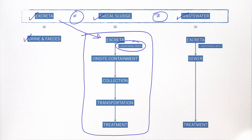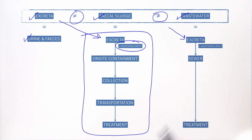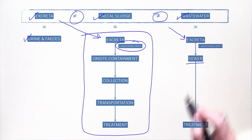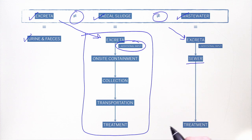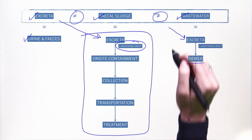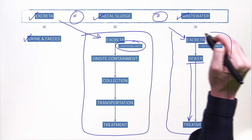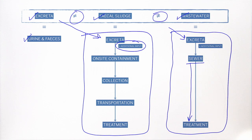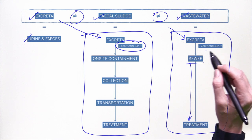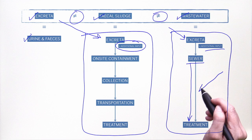Wastewater, on the other hand, also contains excreta, but it is transported via a flush toilet to a sewer, and then transported via sewer to a treatment plant. So wastewater and fecal sludge have entirely different service chains. In addition, wastewater contains less municipal solid waste or garbage, because it's difficult to flush it in the toilet, and it can also include storm water management.